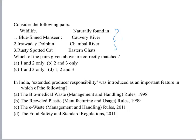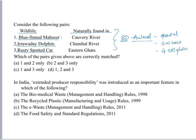Here we find the Irrawaddy Dolphin, Bluefin, Rusty Spotted Cat, etc. Earlier UPSC asked questions regarding the Gharial — where it is naturally found, in Chambal. About the Saltwater Crocodile, UPSC asked which national park to visit to find one — it is Bhitarkanika. Before that, UPSC asked about the confluence of two rivers, Baitarani and Brahmini, where a particular national park is located where we find the saltwater crocodile — that is Bhitarkanika National Park.